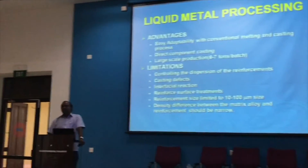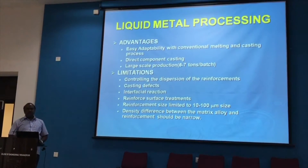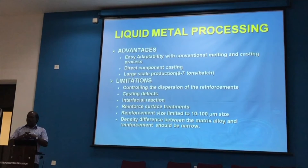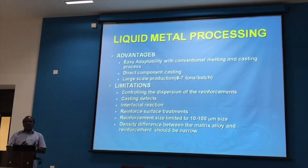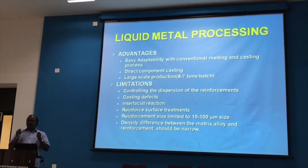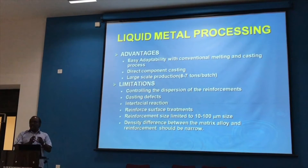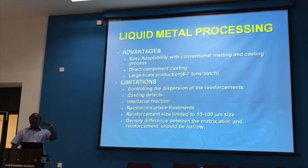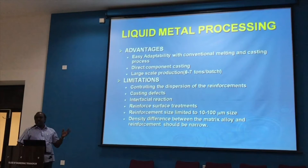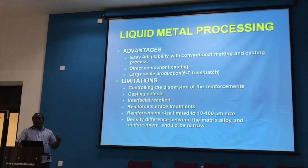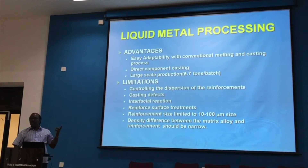There are significant limitations as well. One major limitation is controlling the dispersion of the reinforcement — if not properly dispersed, it will agglomerate. Each particle must be fully wetted by the aluminium. If any surface of the particle is not wetted, a cavity will form, the particle will rise to the top, and agglomeration will occur. Controlling wetting requires managing many process parameters such as uniform stirring speed and particle size.